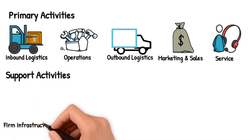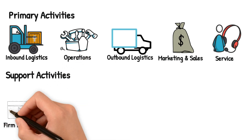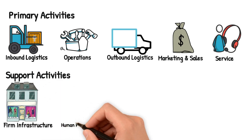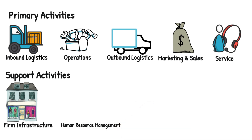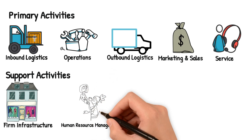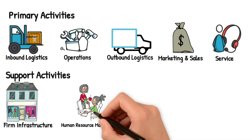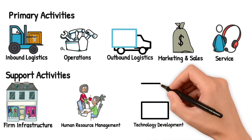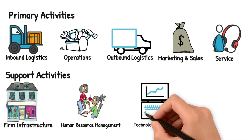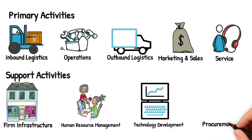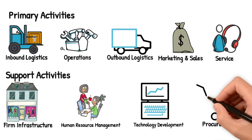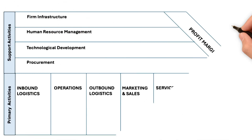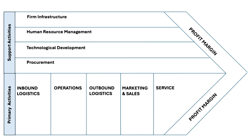Then come the support activities — also called secondary activities — because they support those primary ones. The first support activity is firm infrastructure, next is human resource management, third is technology development, and the fourth is procurement. We will learn how each of them supports the primary activities as we go ahead.